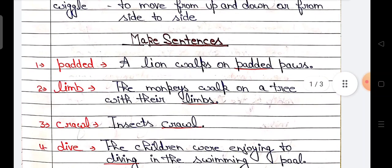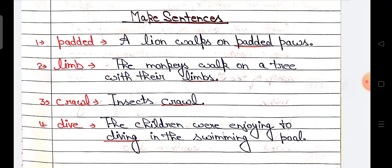First word is padded. A lion walks on padded paws. Number two, limb. The monkeys walk on a tree with their limbs. Number three, crawl. Insects crawl.